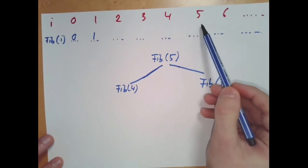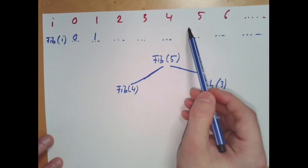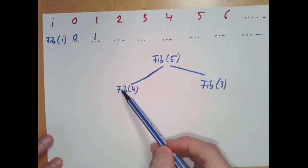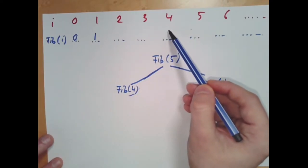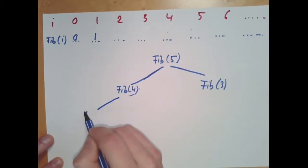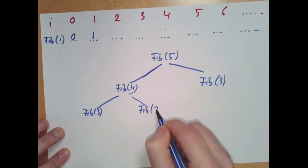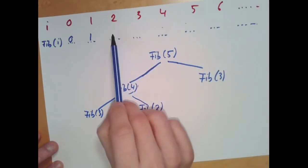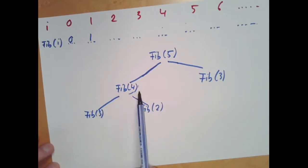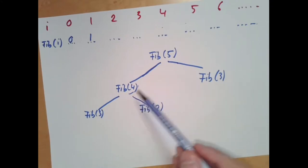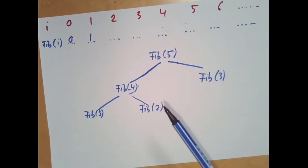Fibonacci of index 5 can be broken down into the sum of Fibonacci of index 4 plus Fibonacci of index 3. In order to calculate the sum, we need to determine Fibonacci of 3 and Fibonacci of 4 first. Until we get numbers from the bottom up, we cannot do the summation yet — similar to how functions in a recursion have to wait in memory until another function call is done.